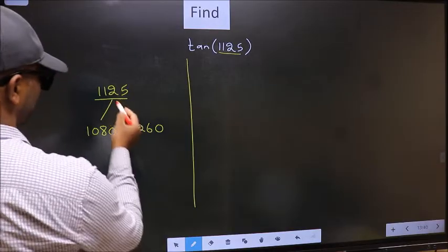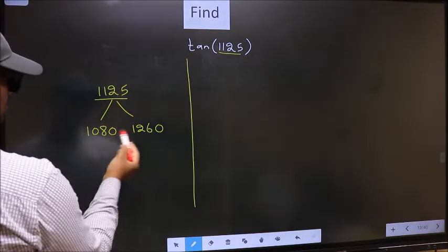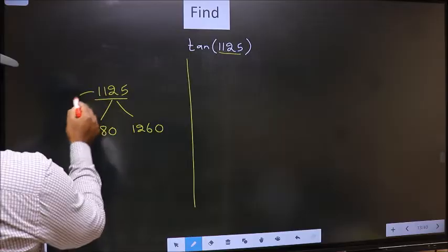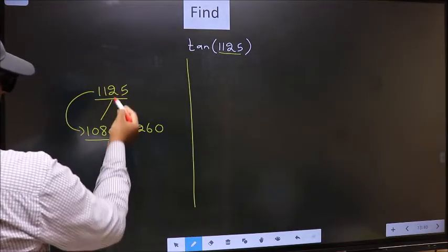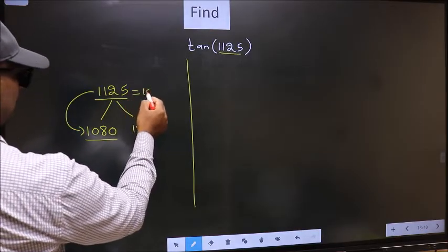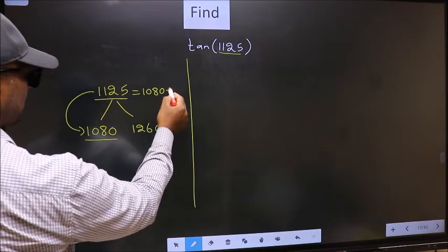Next, 1125 is close to which number? This is close to 1080. So in place of this, now we write 1080 plus 45.